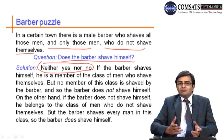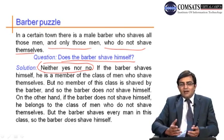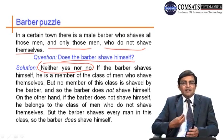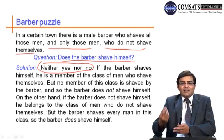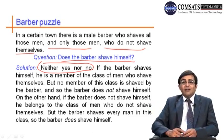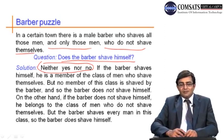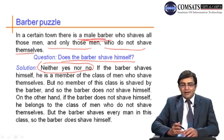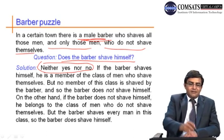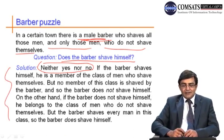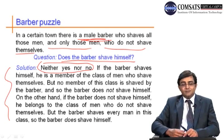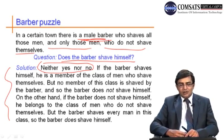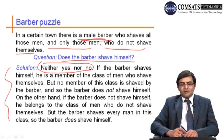There is no answer to this puzzle — it has no solution. Neither yes nor no works, because if the barber shaves himself he shouldn't, and if he doesn't shave himself he should. This Barber puzzle is also discussed in the discrete mathematics books of Susanna Epp and Kenneth Rosen, which you can consult for better understanding.